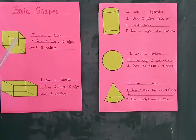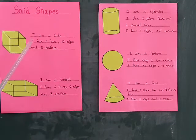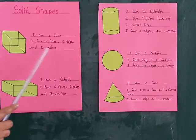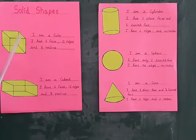First is cube. I am a cube. I have 6 faces, 12 edges and 8 vertices.